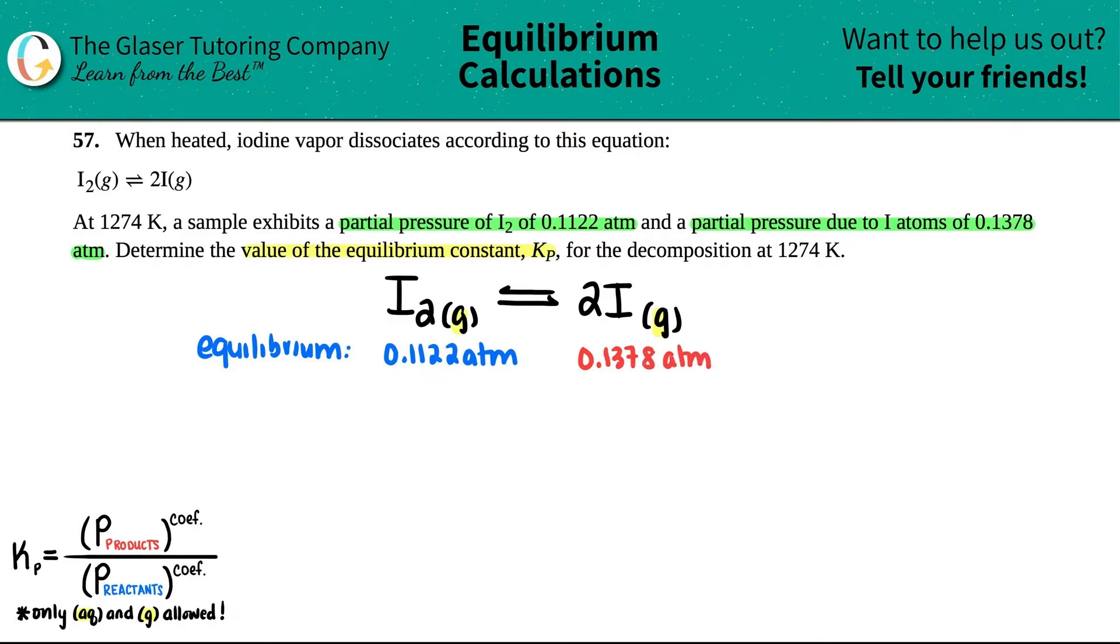Now a common misconception that students may have is some will be tempted to look at this number, see that you have two of them, and times it by two. That is not correct. They're telling you specifically you only have this amount, the 0.1378 atm. You cannot just raise this number up by two. They're saying for all of the iodines you have this pressure.